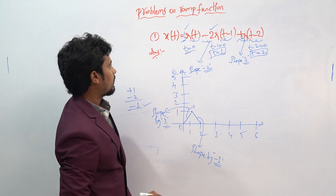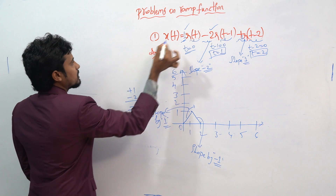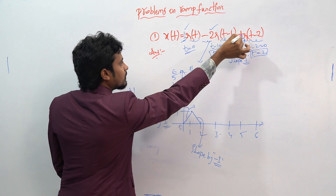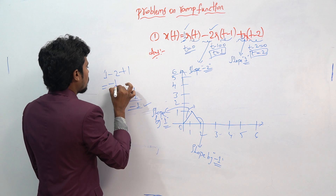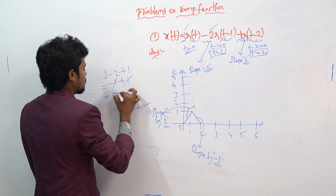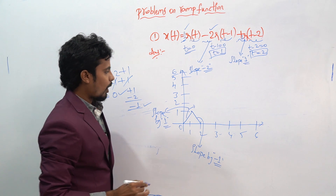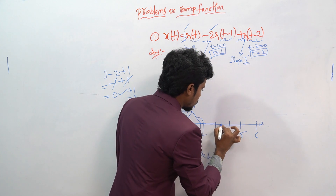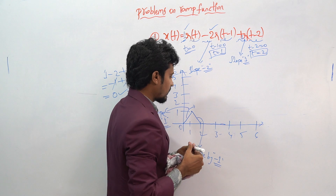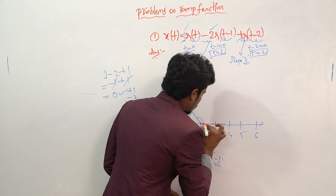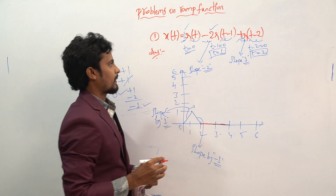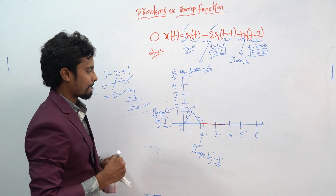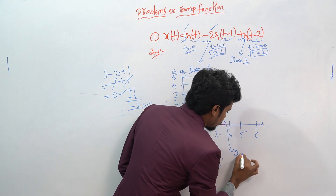The first slope is plus 1, the next slope is minus 2, and the third slope is plus 1. In total, minus 1 plus 1 equals 0. So after t equal to 2, we get a constant — a straight line, also known as a DC line.